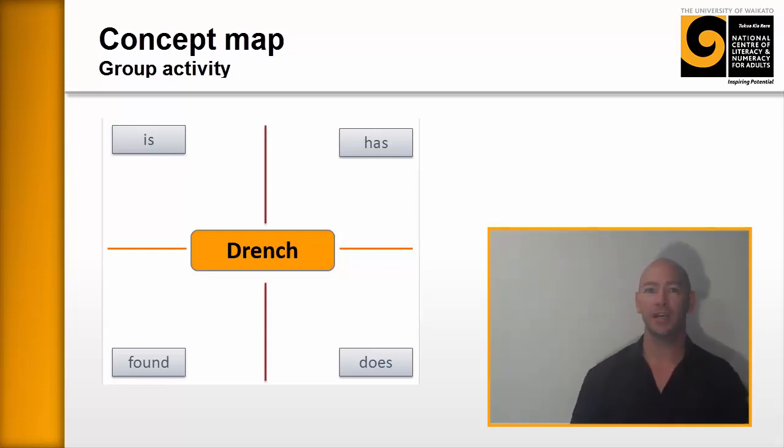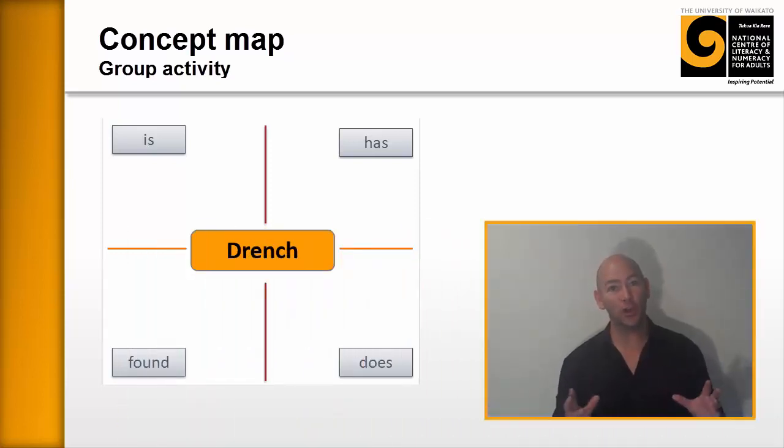And I like to do this pretty quickly and really give the learners a bit of a challenge. So what I say to the learners is here are prompts: is, has, does, and found. I'm going to give you five minutes to write as many words or as many things in each of those quadrants as you can. On your marks, get set, go.